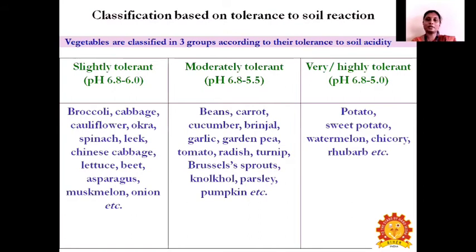Classification based on tolerance to soil reaction: vegetables are classified into three groups according to their tolerance to soil acidity — slightly tolerant (pH 6.8 to 6.0), moderately tolerant (pH 6.8 to 5.5), and highly tolerant (pH 6.8 to 5.0). Slightly tolerant crops include broccoli, cabbage, cauliflower, spinach, kale, Chinese cabbage, lettuce, beetroot, asparagus, musk melon, and onion. Moderately tolerant crops include beans, carrot, cucumber, ginger, garlic, garden peas, tomatoes, radish, turnip, Brussels sprouts, and pumpkin. Highly tolerant crops include potatoes, sweet potato, watermelon, chicory, and rhubarb.